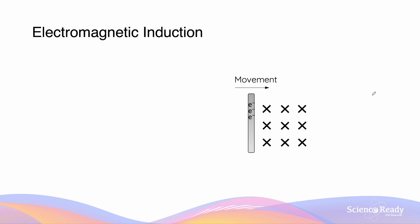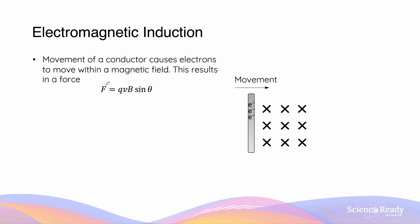Now that we've understood what magnetic flux is and how magnetic flux passing through a conductor can change, let's talk about electromagnetic induction. Suppose we have a rod containing electrons, and we move this rod into a uniform magnetic field. The charged particles — the electrons in this conductor — as it's moving into the field, will be acted upon by a force due to the magnetic field. This force is given by qVB sin theta.